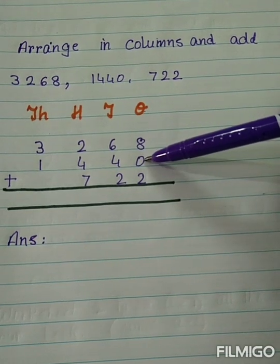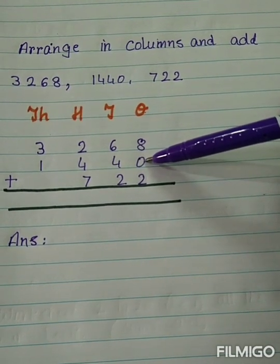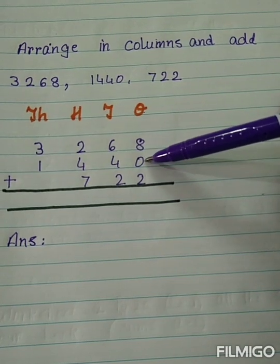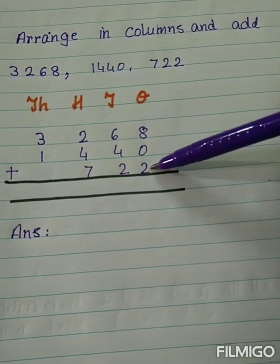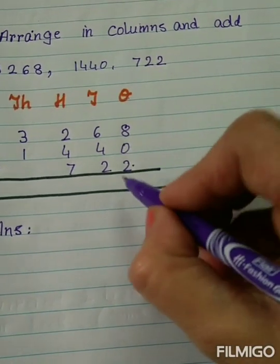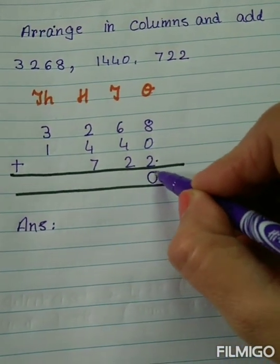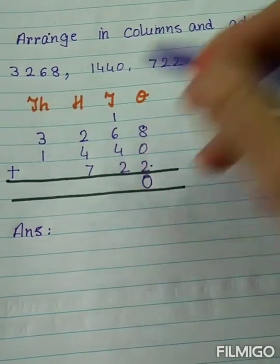8 plus 0. You know what it gives because you know the properties of addition. 8 plus 0 is 8. 8 plus 2 will give us 10. So here we have 0 and carry over 1.